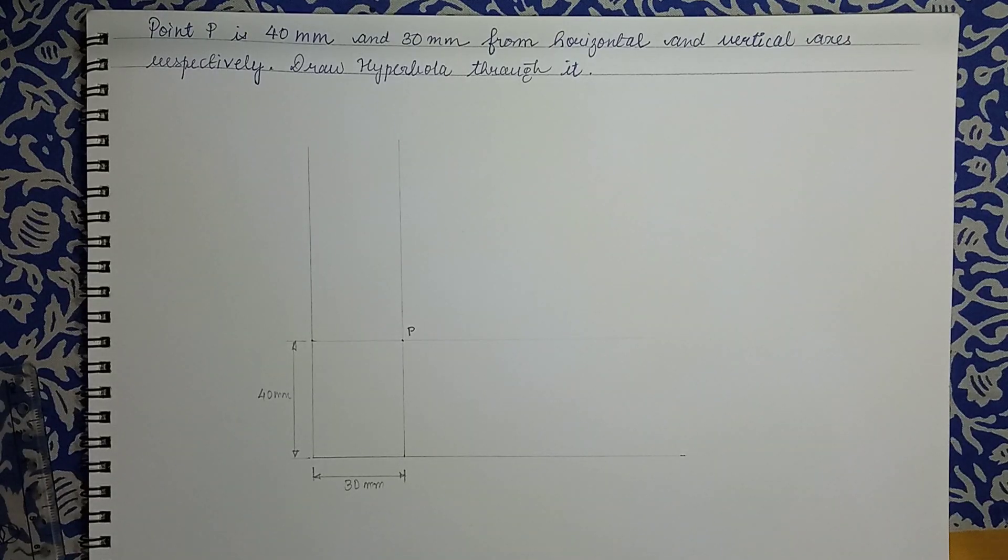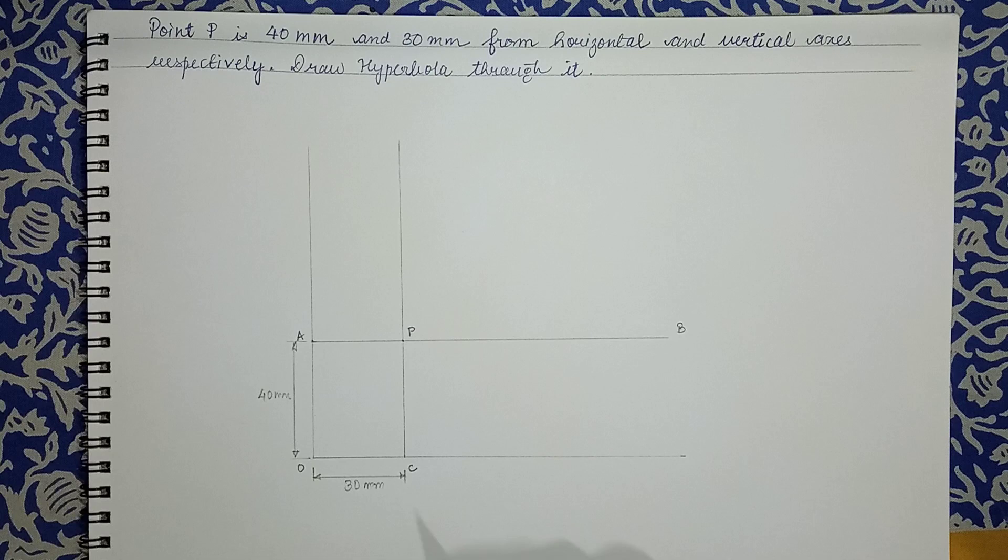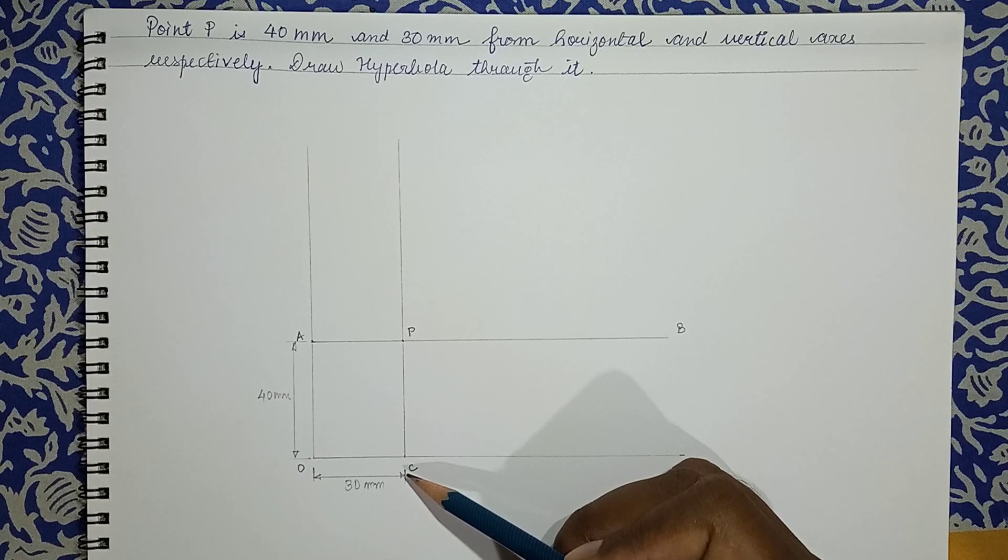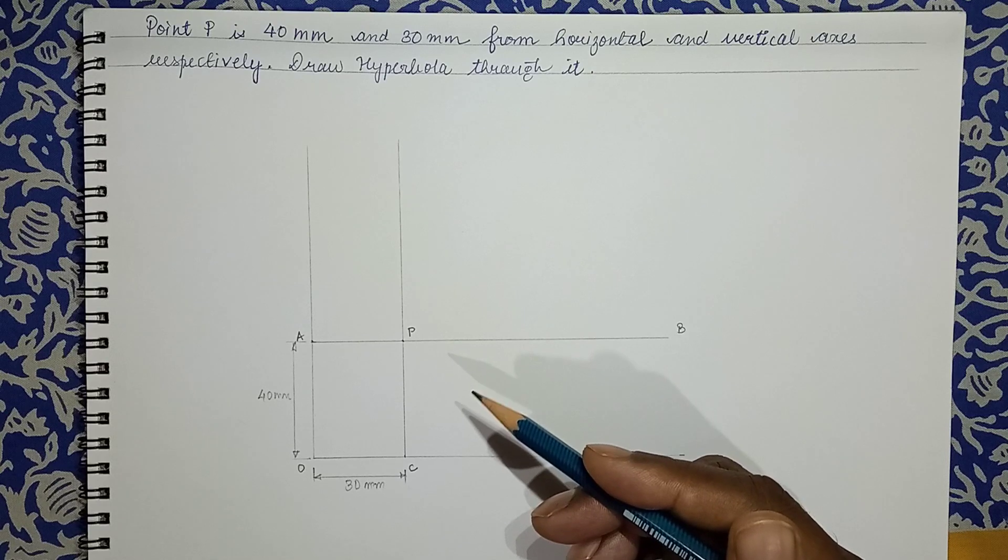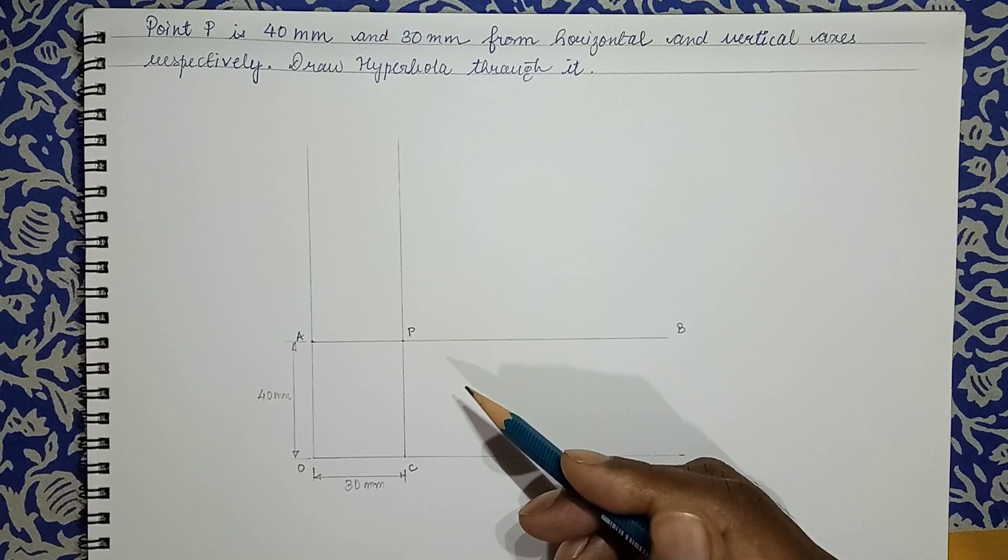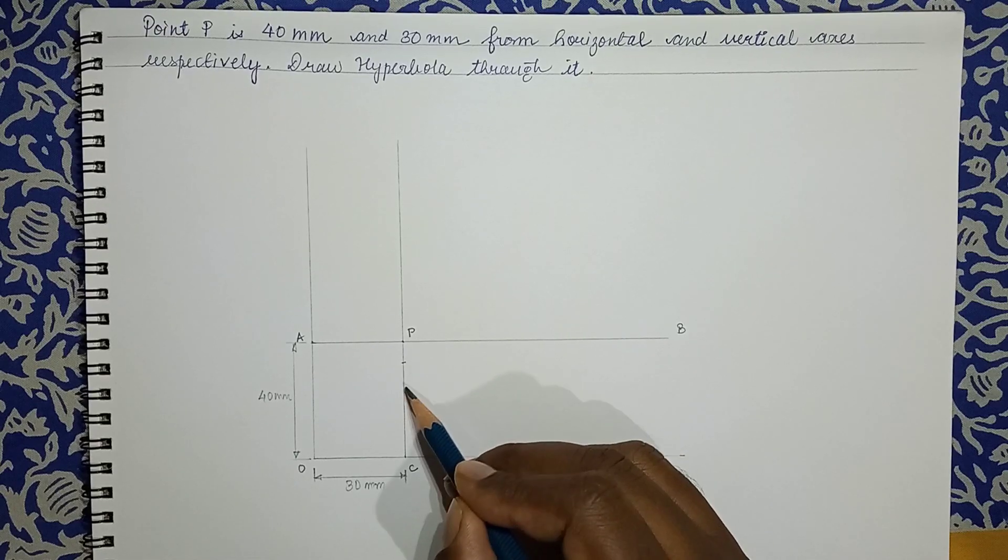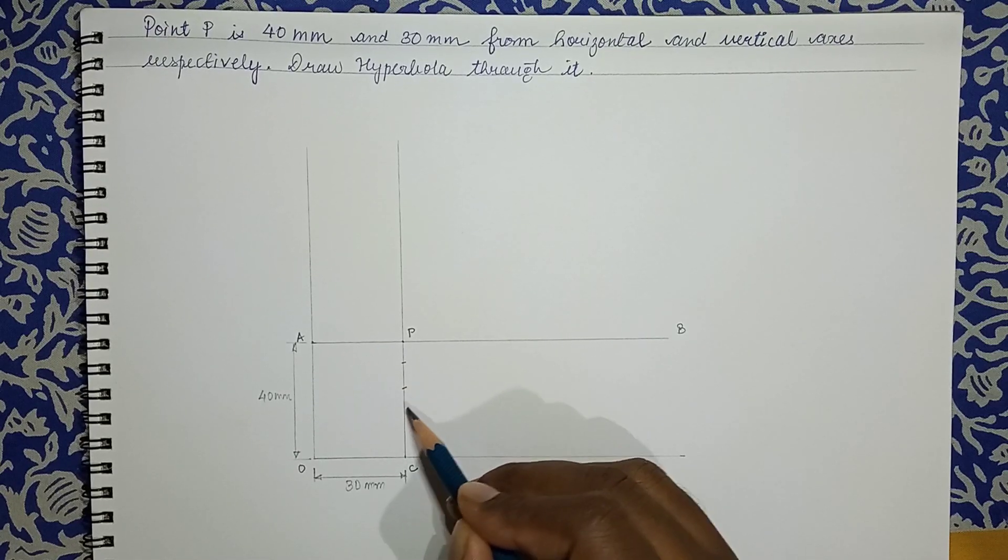So here we have labeled the points. And now this distance PC, we can divide it into any number of points, say three or four divisions at any distance. So I am taking a comfortable distance.